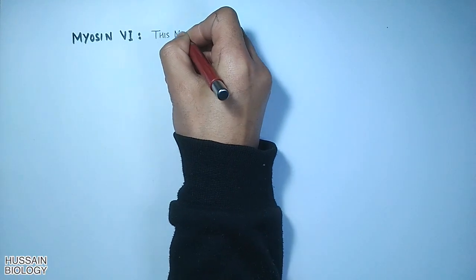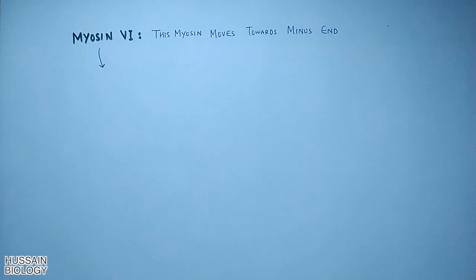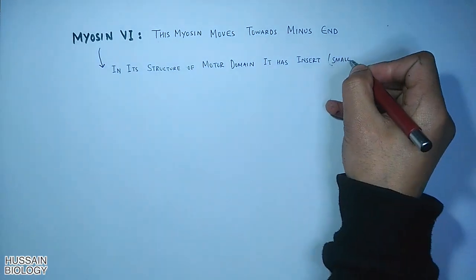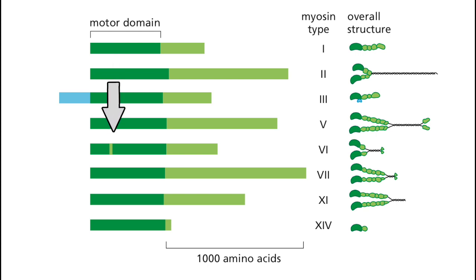There is another myosin protein called myosin 6, which is different from other proteins because it moves toward the minus end. All other myosins move toward the plus end, but myosin 6 is the only one that moves toward the minus end. This is because in its motor domain structure, there is a small insertion. As shown in the figure, all myosins have almost the same motor domain, but myosin 6 has a different structure with this insertion, which makes it move toward the minus end.